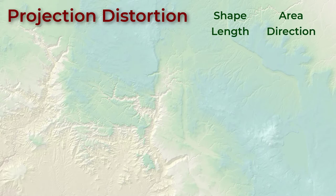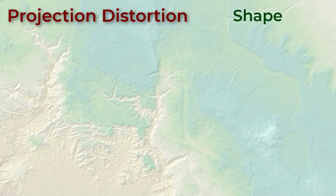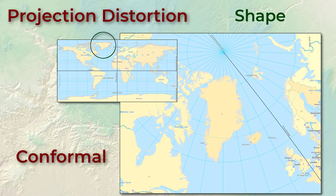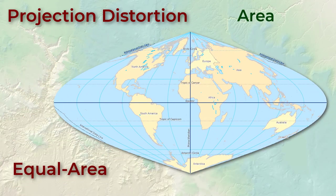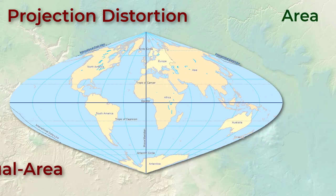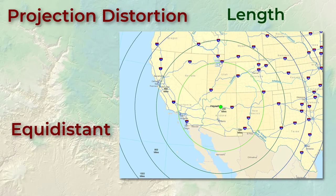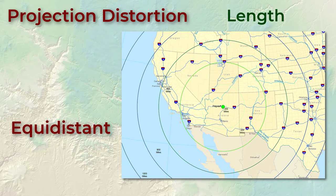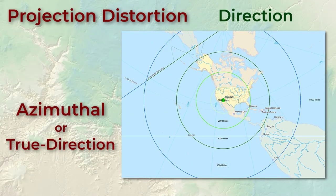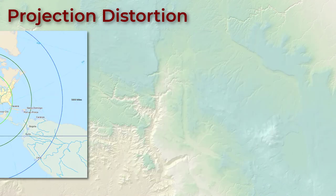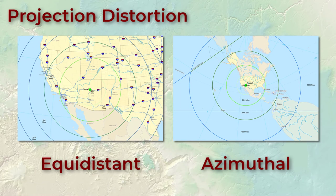Projections that maximize accuracy in shape are called conformal projections. Those that maximize area are called equal area projections. Those that maximize length are called equidistant projections, and those that maximize direction are called azimuthal or true direction projections. Equidistant and azimuthal projections do not produce true distance and direction everywhere on the map — they only work from a specific point or along a specific line.